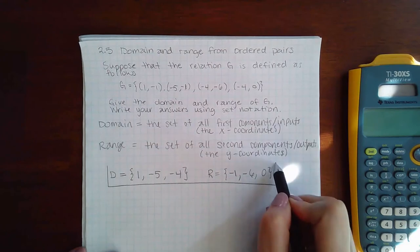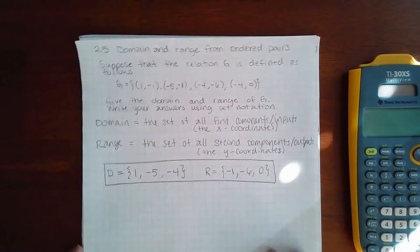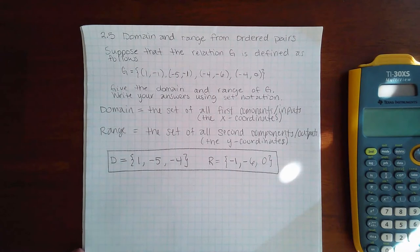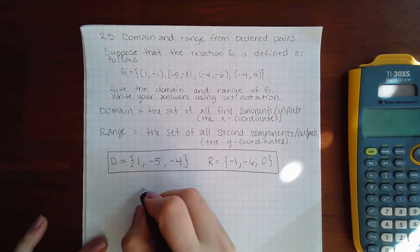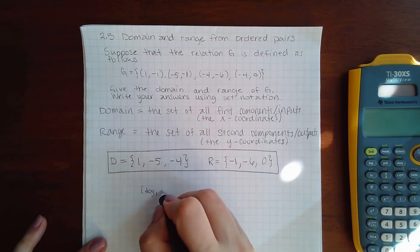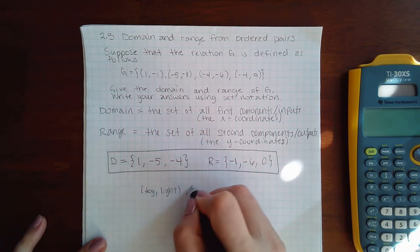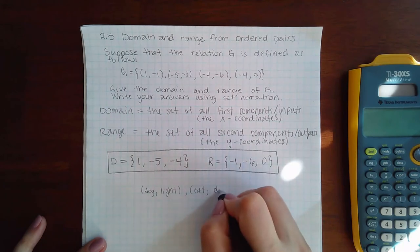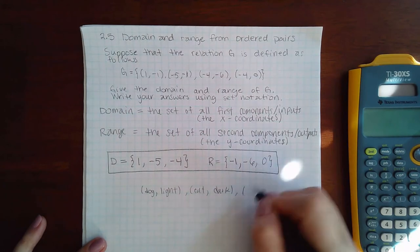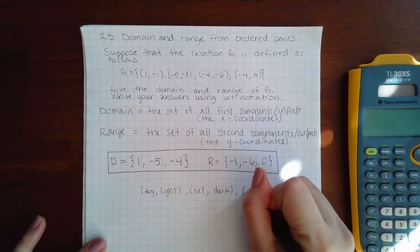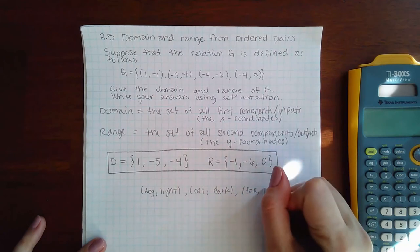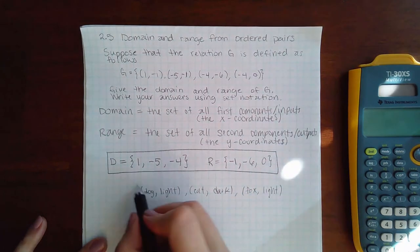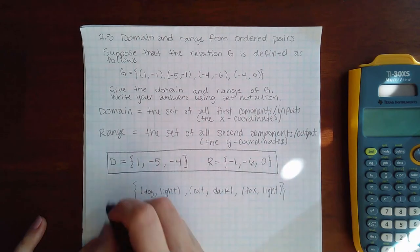Sometimes you might have non-numeric pairs like dog and light, cat and dark, fox and light. Something like that may be the function you're given.